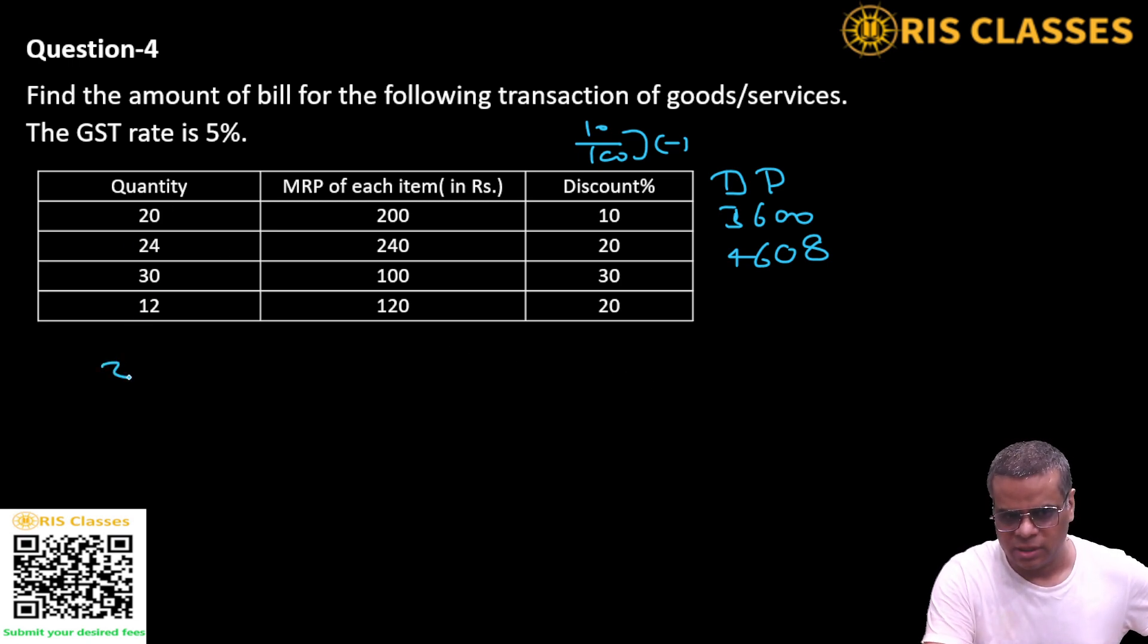Number of items 30, price of each item is 100, and discount is 30%. 30 by 100. 100 minus 30 is 70. 100 and 100 get cancelled, 70. 30 into 7 is 21. 2100. Next.